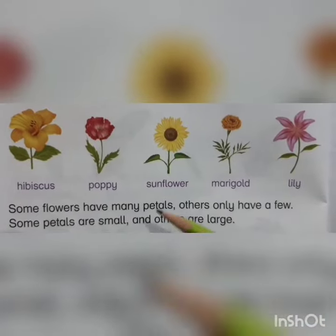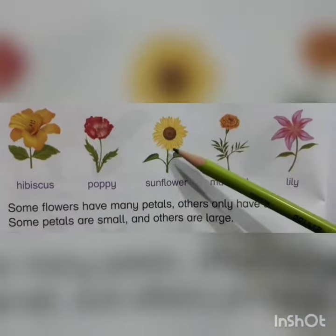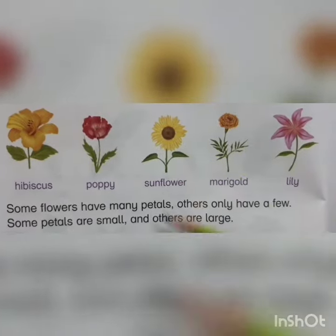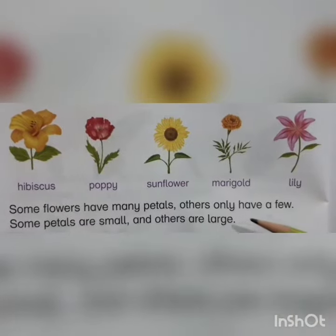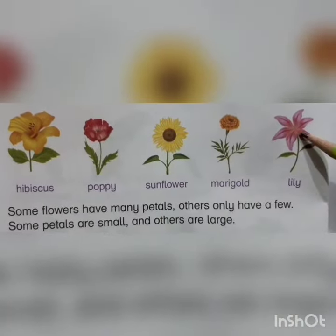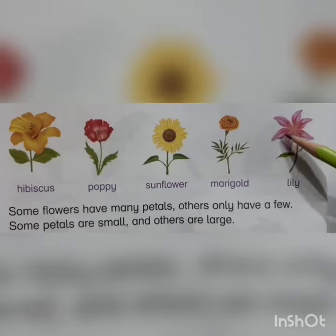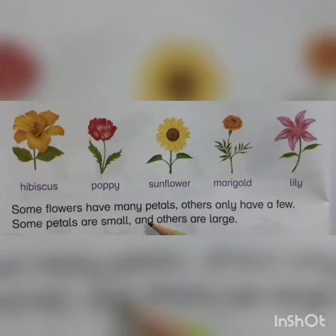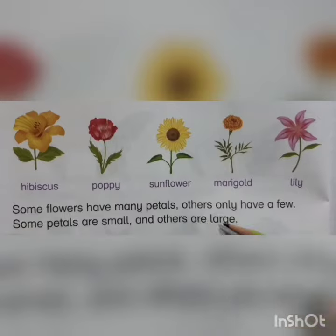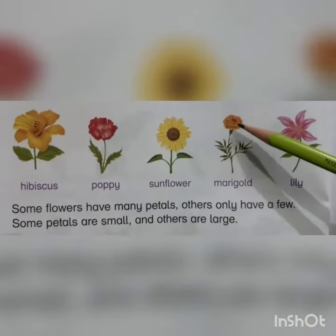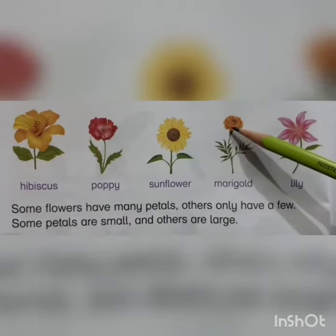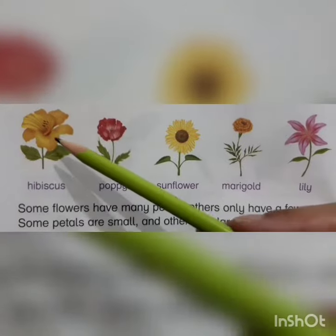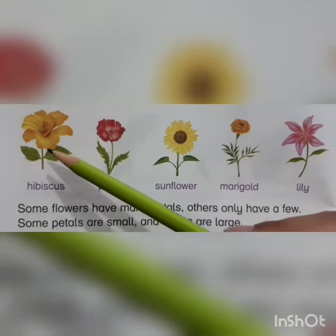Some flowers have many petals — just look at this sunflower, it has a lot of petals. Others only have a few, like this lily, which has only a few petals. Some petals are small, like this marigold which has very small petals, and some are large, like this hibiscus which has very large petals.